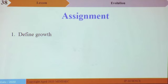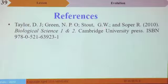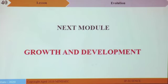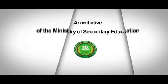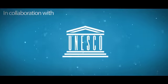Assignment. One: define growth. Two: explain two reasons why organisms grow. To enable you to do the assignment, consult your main text, Biological Science 1 and 2 by Taylor Etter, and for further reading consult the text on the slide. We have come to the end of this lesson. The next module will be on growth and development. Thank you.